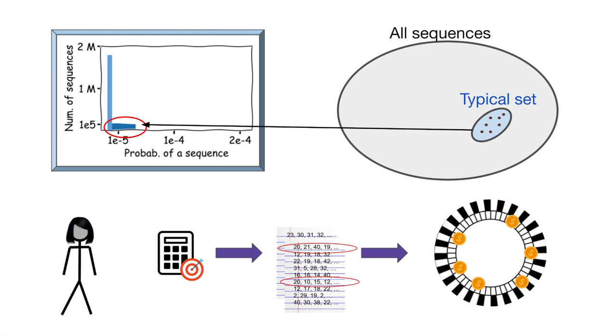By AEP, the sequences that occur in the multiverse are almost certainly from the typical set. Ashley is basically guaranteed to win all her bets.